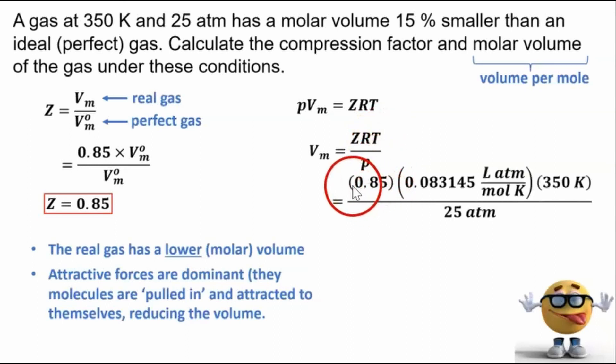Plugging in some numbers for the compression factor R, T, and P, making sure our units cancel out, we get a molar volume of 0.99 liters per mole.